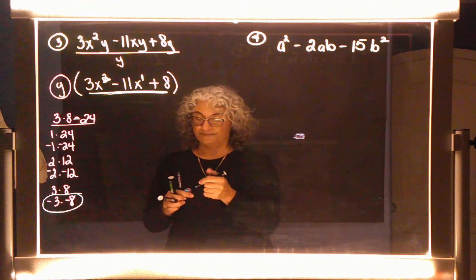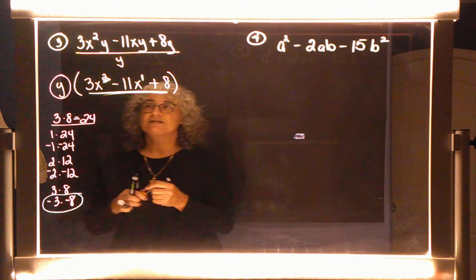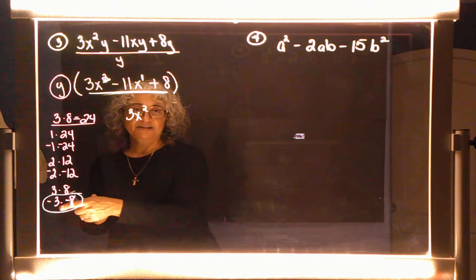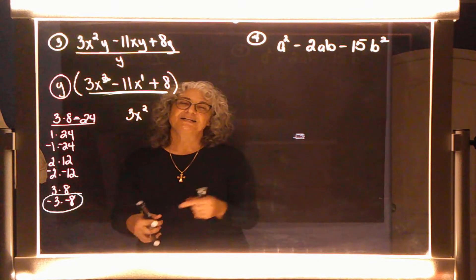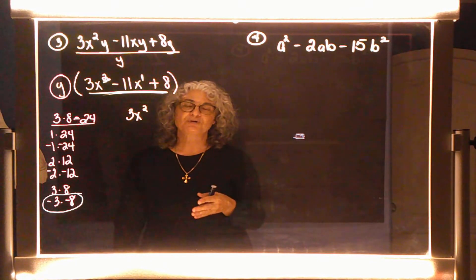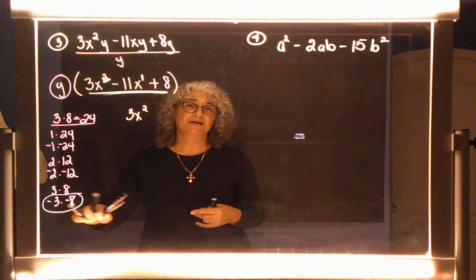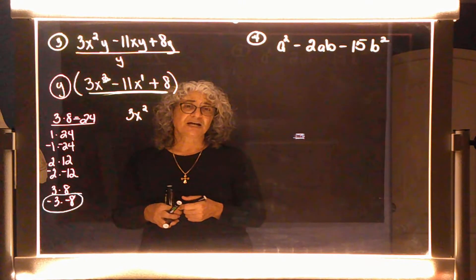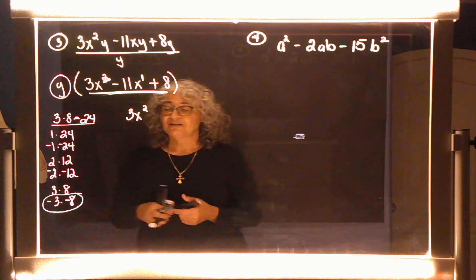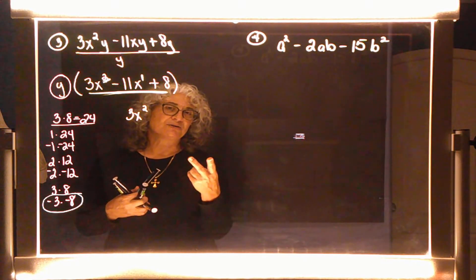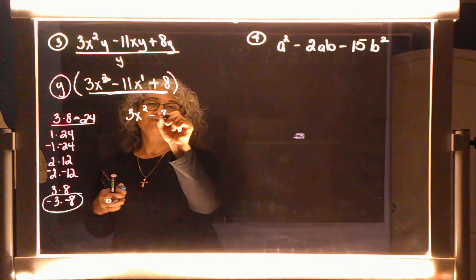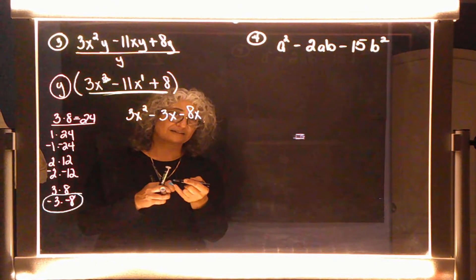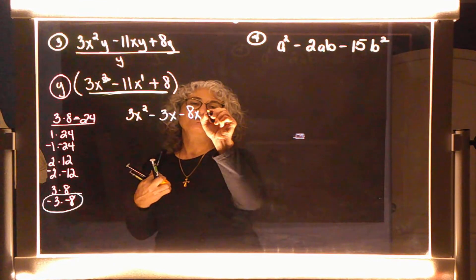So now let's write the 3x squared, then instead of the negative 11x, write the minus 3x and then the minus 8x. Does it matter which order I write those? No — you're going to get the same answer either way. I just keep it in the order that I wrote it, but you could write minus 8x first and minus 3x second and get the same answer.